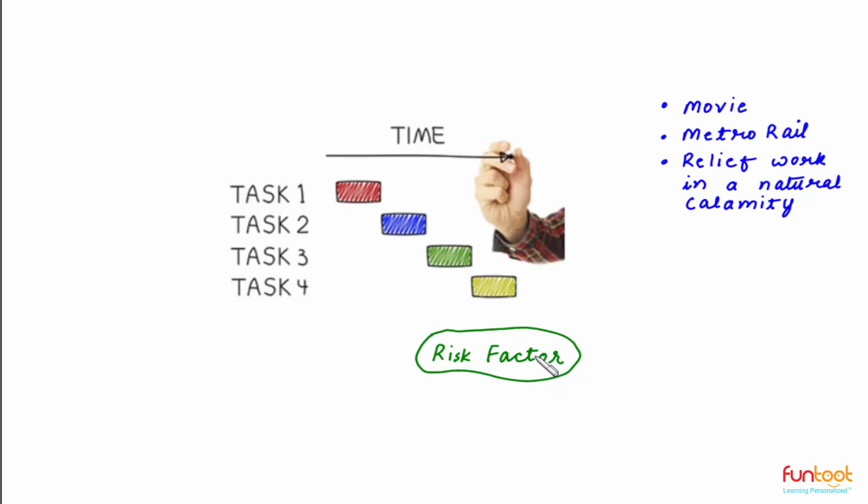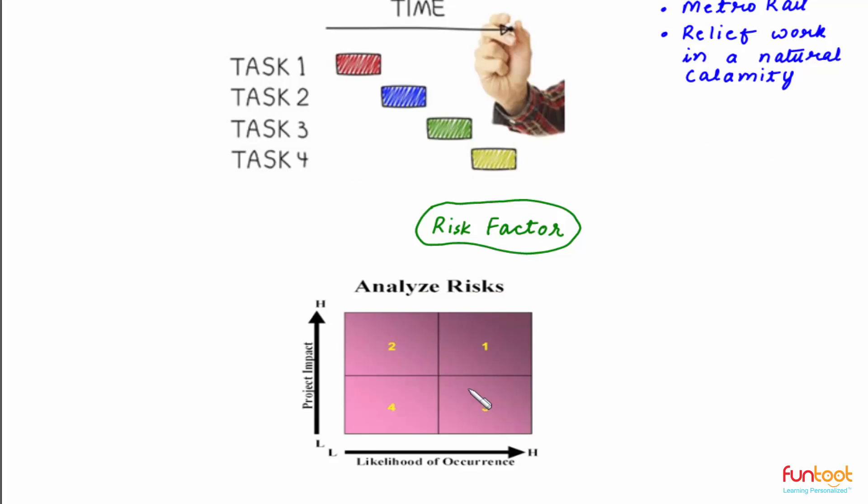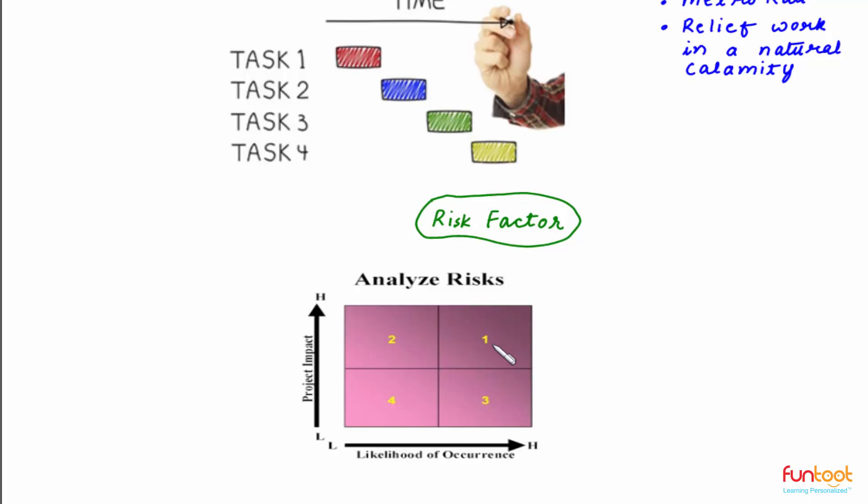One element of any project which is responsible for its success is how we handle the risk factor. So as a part of analyzing risks, we look at the probability of occurrence of unforeseen events and how these unforeseen events impact the project. Quantifying risk is very important to control the cost of a project.